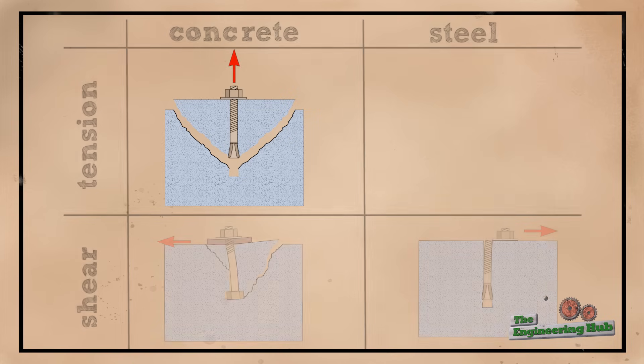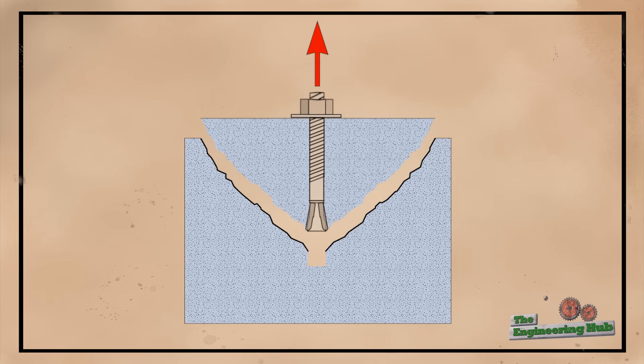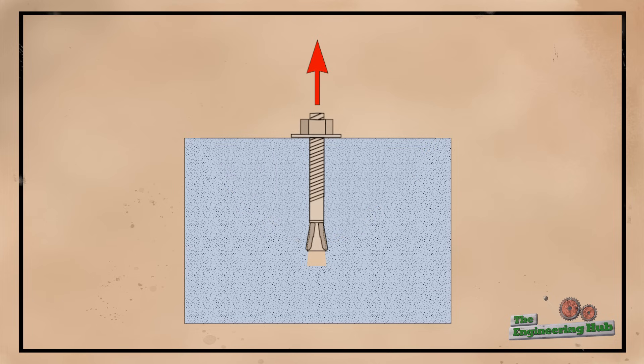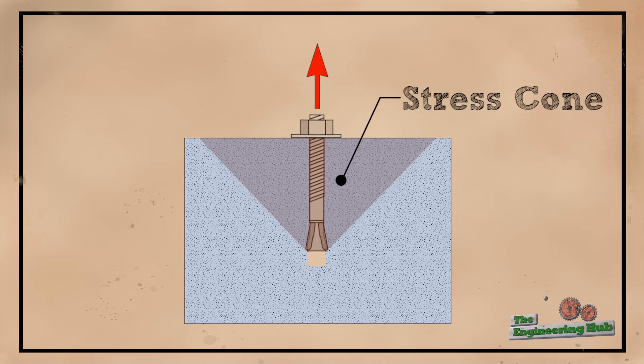These concrete failures also illustrate the way that anchor stresses are moving through the concrete. The forces generally spread in a cone outwards from the anchor point. Imagining the failure surface is an important step in the design process, which we'll touch on towards the end of this video.